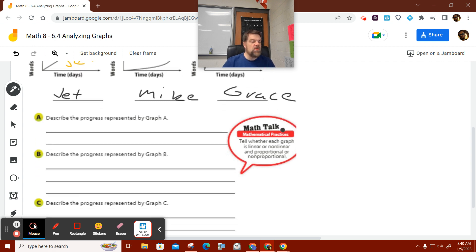It says describe the progress represented in A. This is a constant rate. Remember, I said a constant rate of change is a straight line. So that's linear. It's the same amount every time.